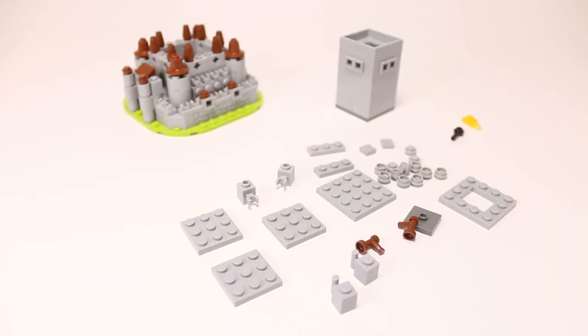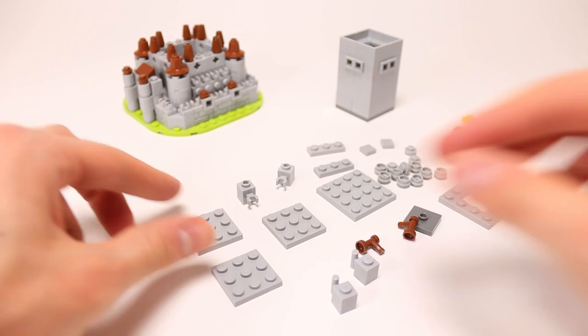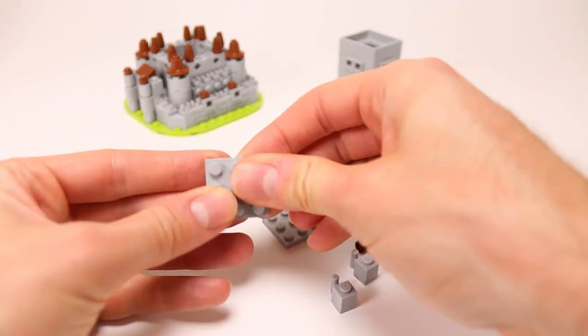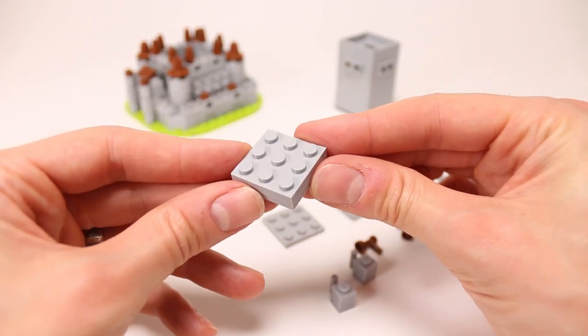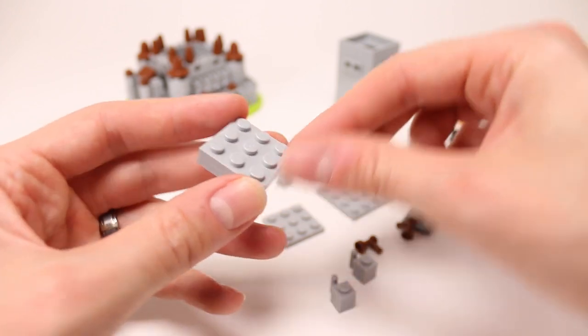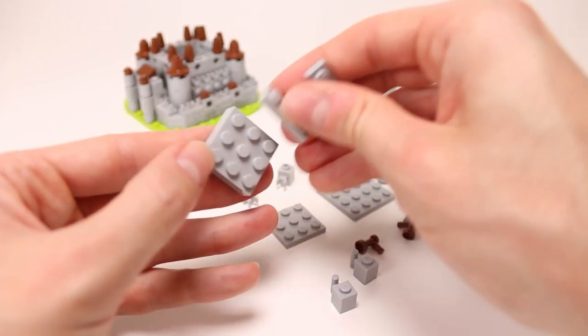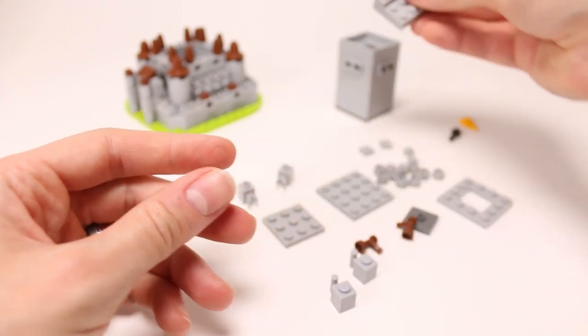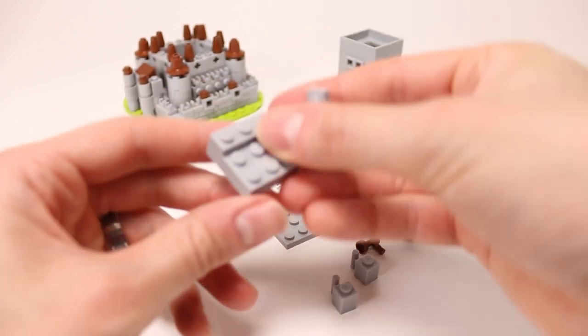And for the final section of our tower we will need these pieces. We are using these 3x3 plates to create this section so that it's just smaller than our 4x4 tower there.